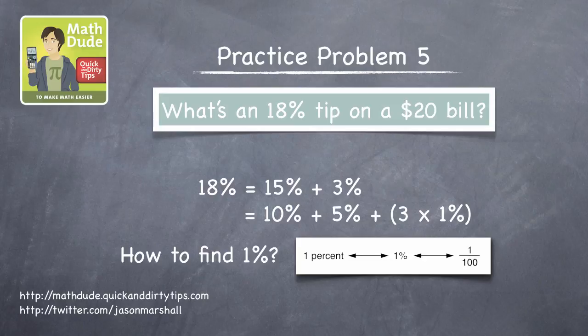Just divide the total amount, $20 here, by 100 instead of 10. That's the same as moving the decimal point two places to the left instead of one. So if 10% of $20 is $2, 1% of $20 is $0.20.